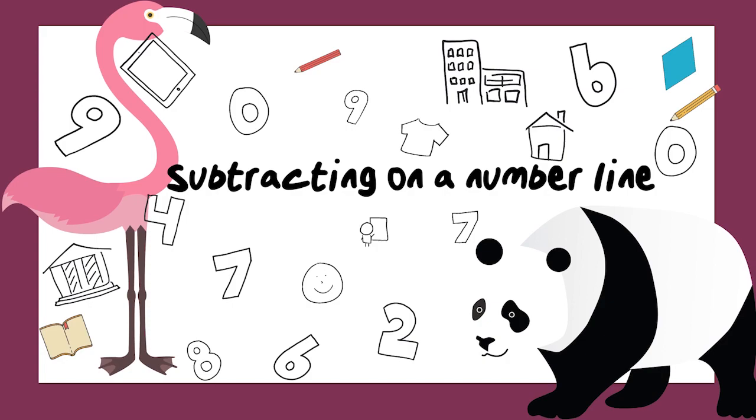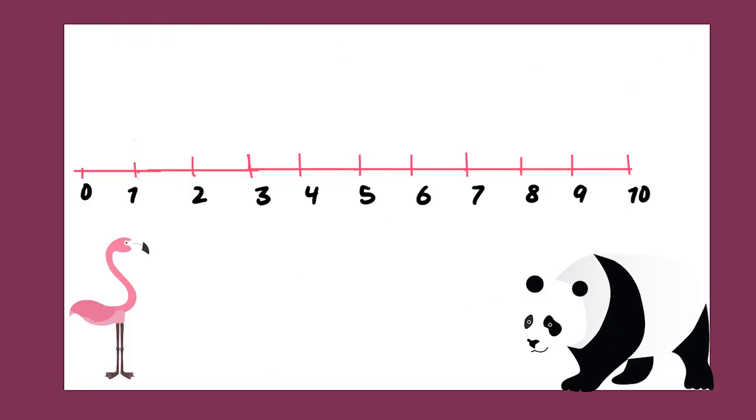Subtracting on a number line. We have our number line. The number line always starts at 0, so our number line has only numbers from 0 up to 10. And today we are going to learn how to subtract.